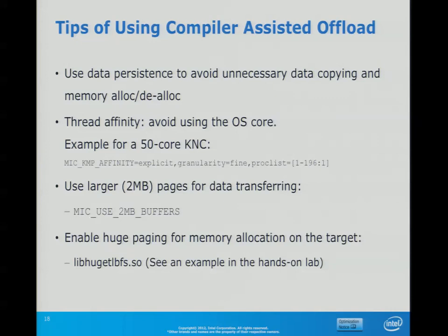Here are a few tips to get better performance from Compiler Assisted Offload — basically the same as with Automatic Offload. You should tune the affinity using the same knobs. As mentioned in the memory session, there are also things like huge TLB buffers for larger page sizes. You can adjust a threshold until larger page sizes are used via an environment variable, assuming the mic prefix. That threshold value controls when large pages are activated.